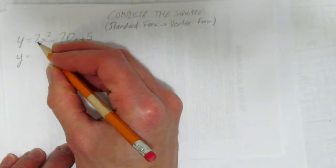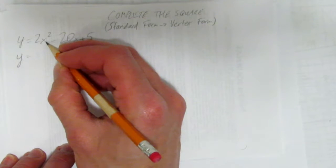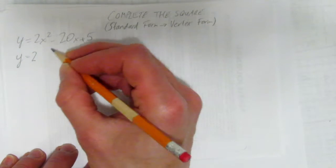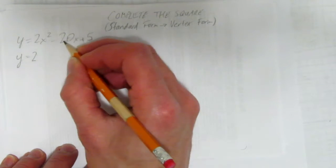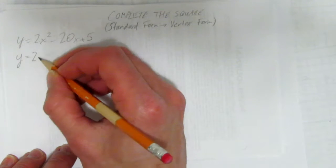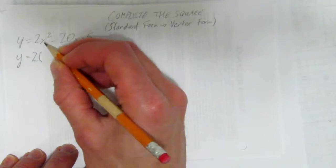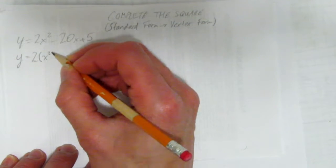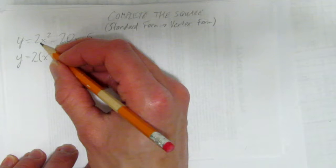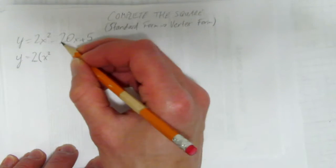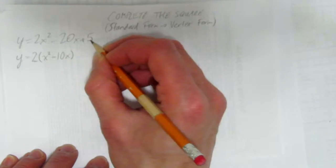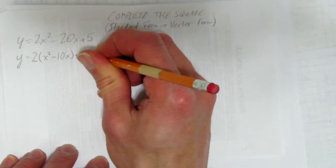Step one is to pull this coefficient in front of the x squared, that is this leading 2, out. We're going to factor it out. But note to self, we're only going to factor it out from the first two terms, not the constant. So this 2 comes out, and now we'll divide each of these by 2. What's 2x squared divided by 2? Just x squared. And now what's negative 20 divided by 2? Negative 10x. Close the brackets, we don't touch this 5 yet. That's step one.